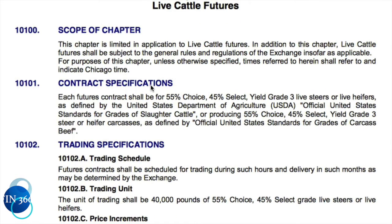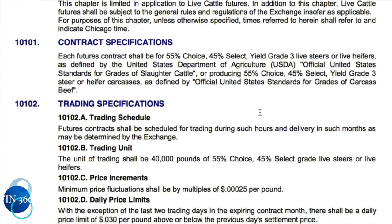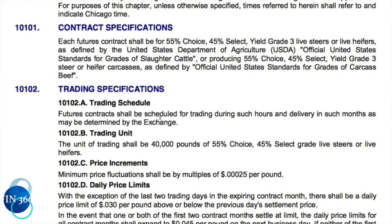The first thing we come across is the contract specification, which tells us in the first line: each futures contract shall be for 55% choice, 45% select, yield grade 3 live steers or live heifers. It doesn't say 'and/or' — it says 'or.' You can't mix them; either you deliver all live steers or all live heifers.